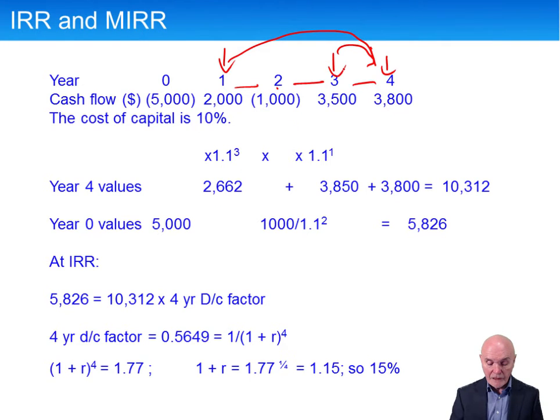The year three inflow can only be invested for one year before it gets to that. So that'll be only times 1.1, that'll come to 3850. And then the final inflow is already at time four. It's not going to be invested at all. It is already at its terminal value. So the sum of these three inflows projected forward, basically to time four, is 10,312.